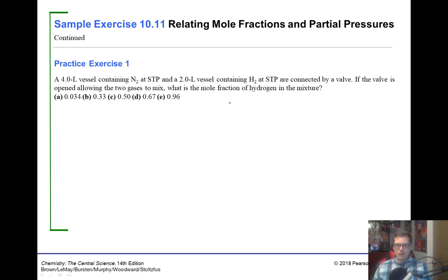So here we go, a couple of practice problems. A 4.0 liter vessel containing nitrogen at STP and a 2.0 liter vessel containing hydrogen at STP are connected by a valve. If the valve is opened, allowing the two gases to mix, what is the mole fraction of the hydrogen in the mixture? So the mole fraction of H2 would be equal to the moles of H2 divided by the total moles. So that's essentially what we're going to find. We got to find the moles of hydrogen, the moles of N2 or the total moles. They give us a bunch of STP values. And so that should tell us that we're going to use the ideal gas equation. So we have PV equals NRT. This time we're solving for n.